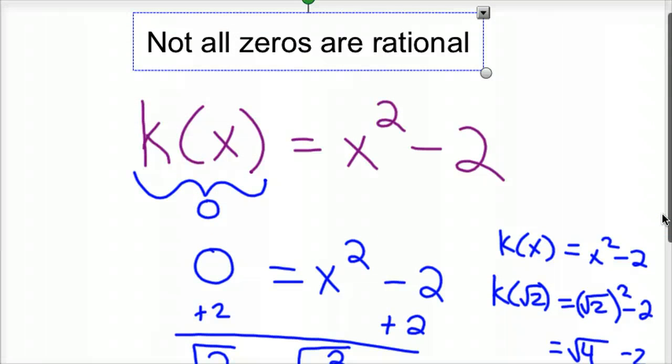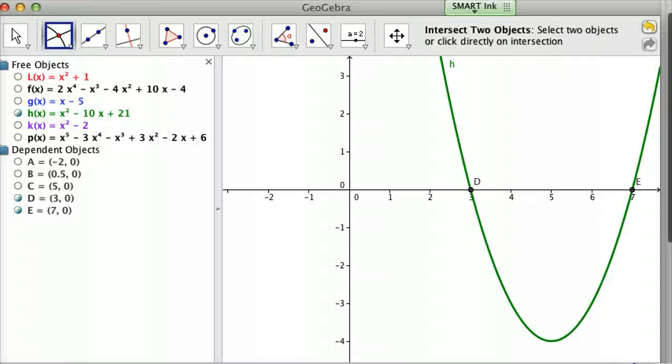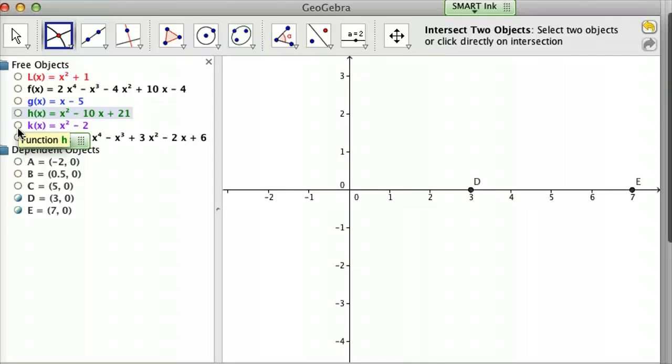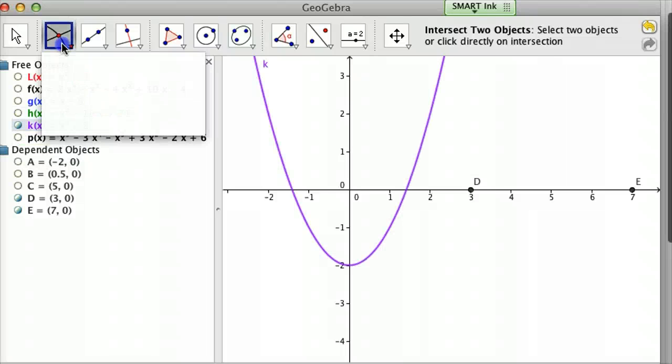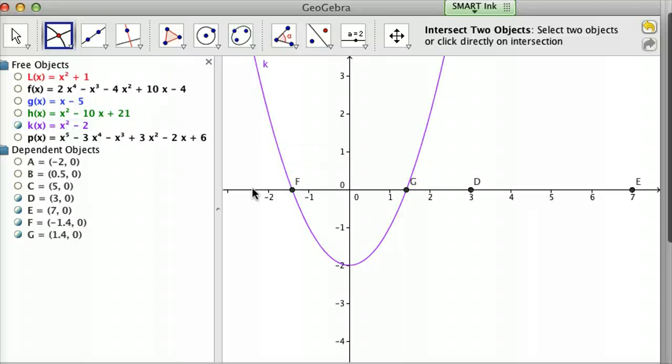They're irrational. They're not a rational number. So GeoGebra-wise, this is what they look like. Let me get rid of this one. Pull up the next one, the purple one. There they are. If you find where they meet, F and G, it gives you -1.4 and 1.4.